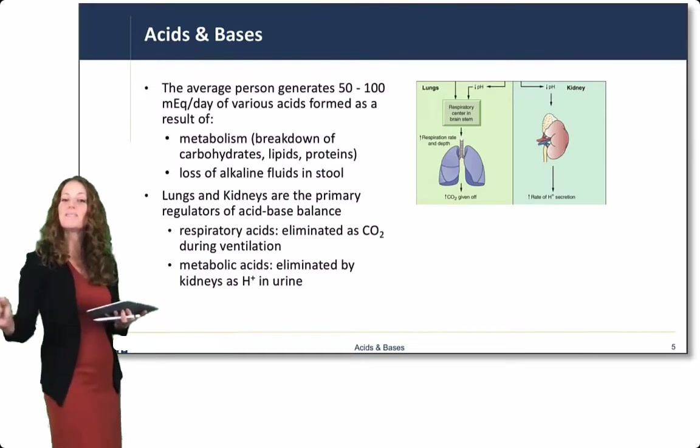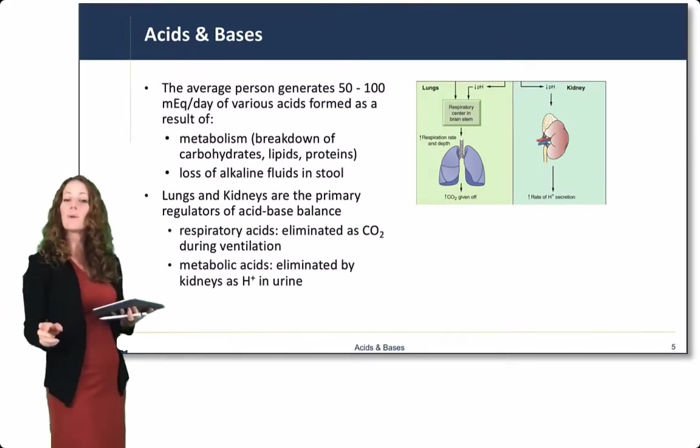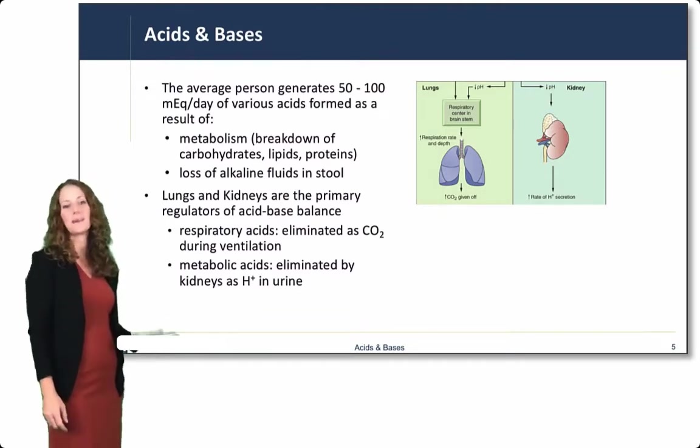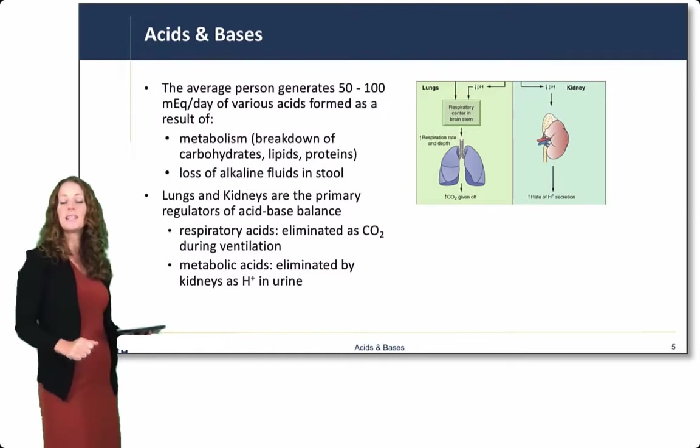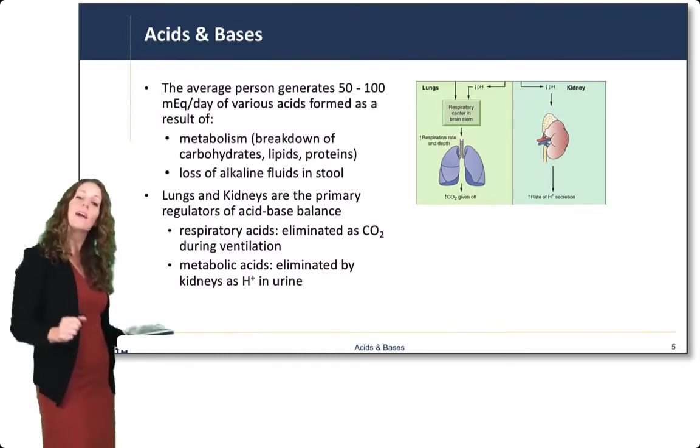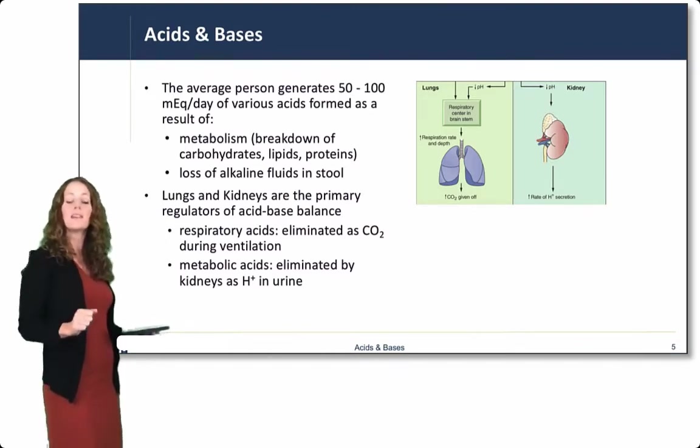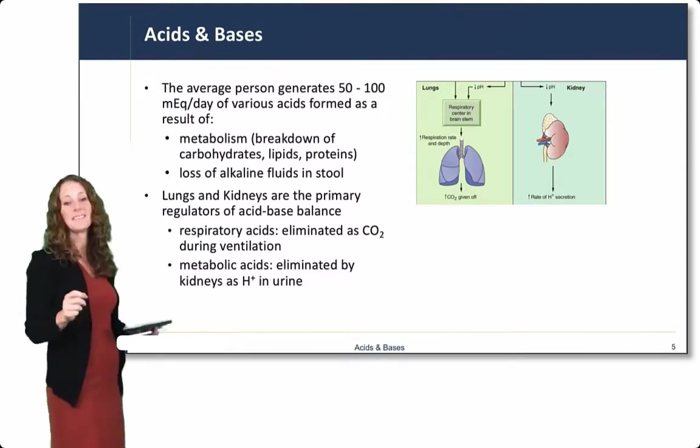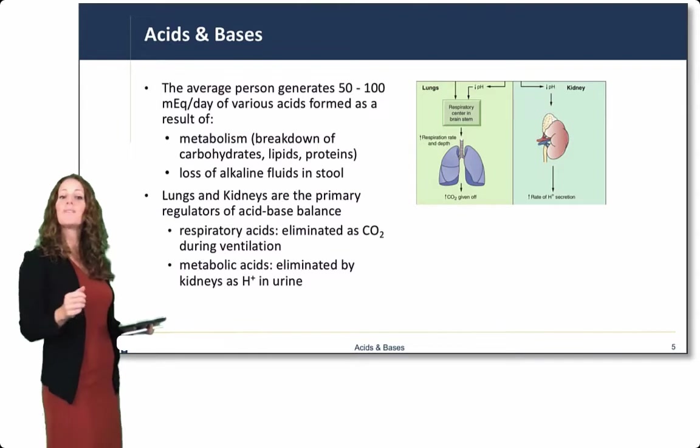The average person generates 50 to 100 milliequivalents per day of various acids formed as a result of metabolism. This is breakdown of carbohydrates, lipids, and proteins, and loss of alkaline fluids in the stool. That is bicarbonate-rich fluid in the stool. Lungs and kidneys are the primary regulators of acid-base balance.